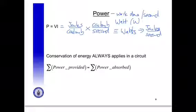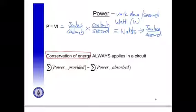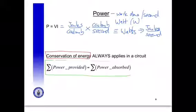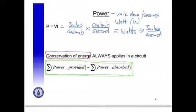It's the rate at which work is done in a circuit. We also have a very important concept: conservation of energy. In a circuit there is conservation of charge — charge cannot be created or destroyed — and there is conservation of energy. Conservation of energy always applies, meaning the sum of the power supplied must be equal to the sum of the power absorbed. This is a very key concept to remember.